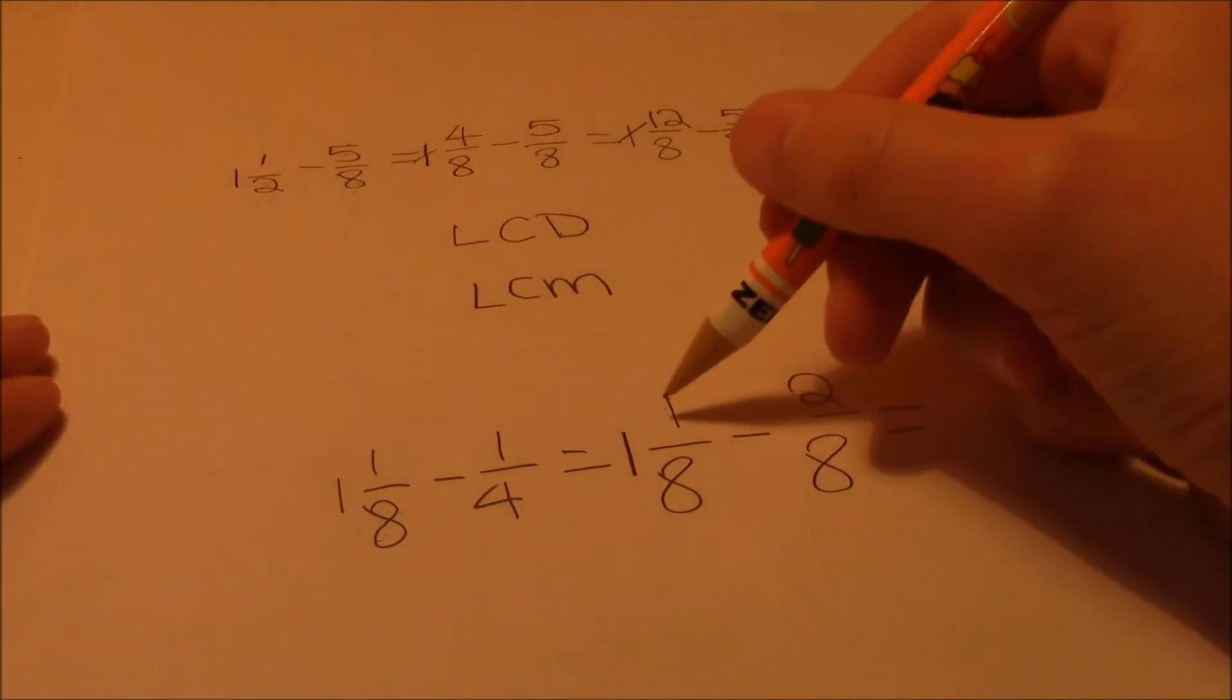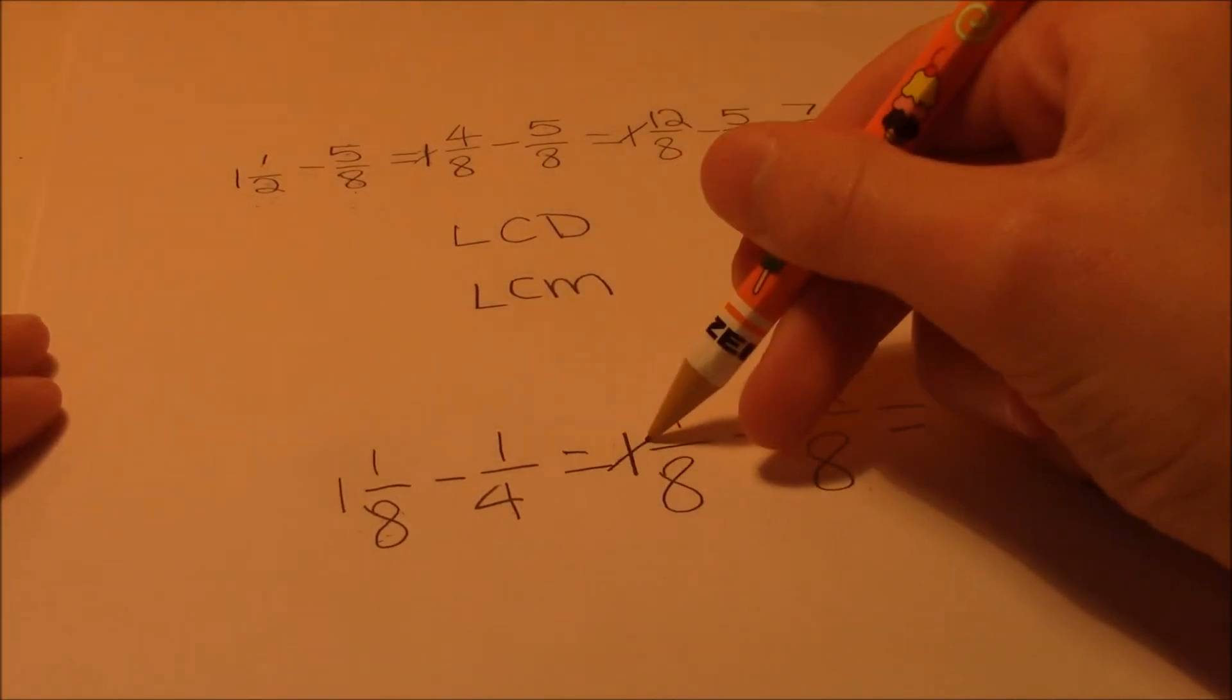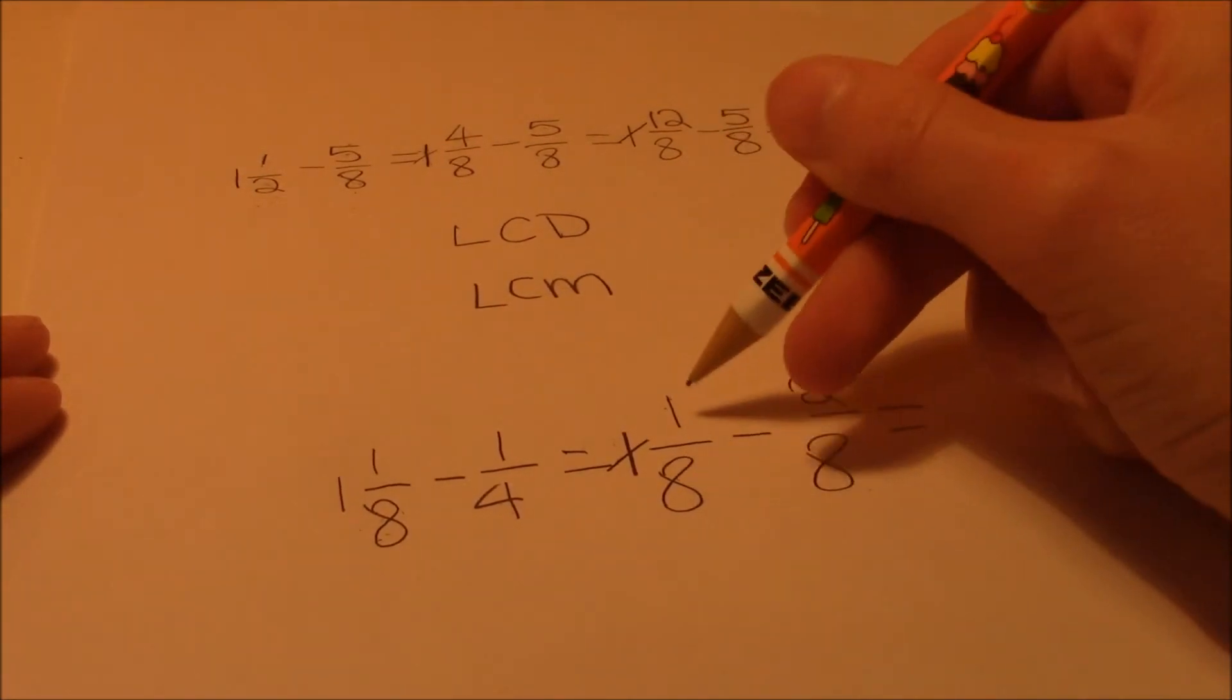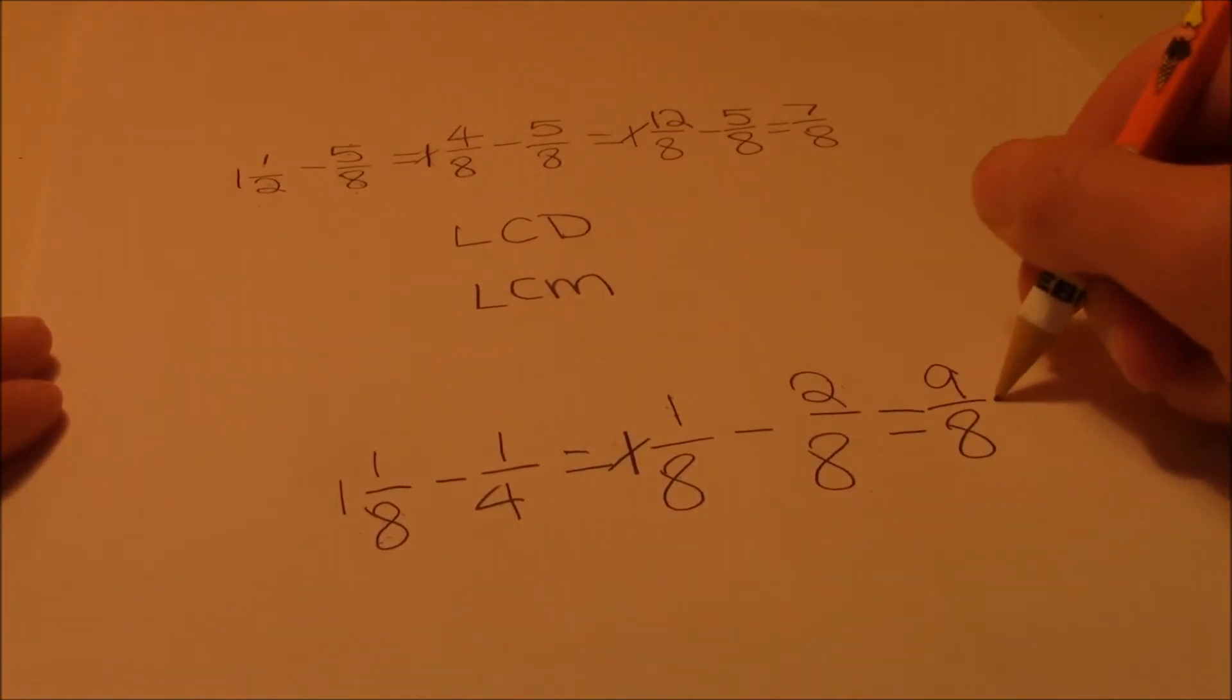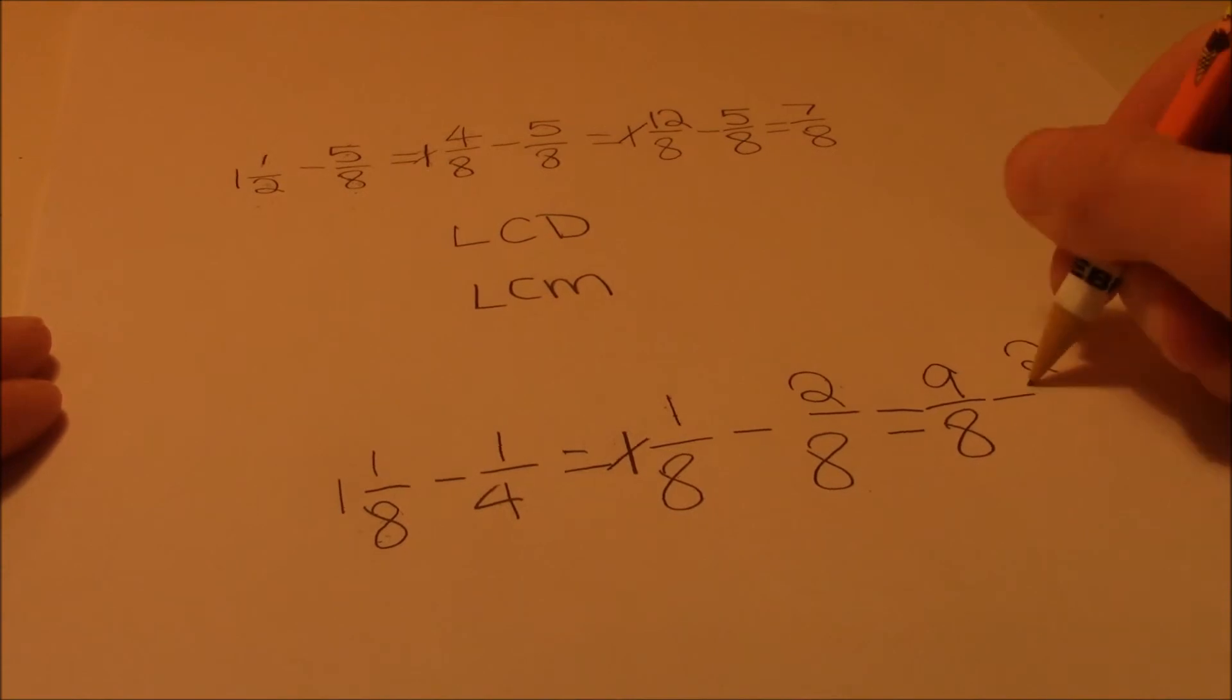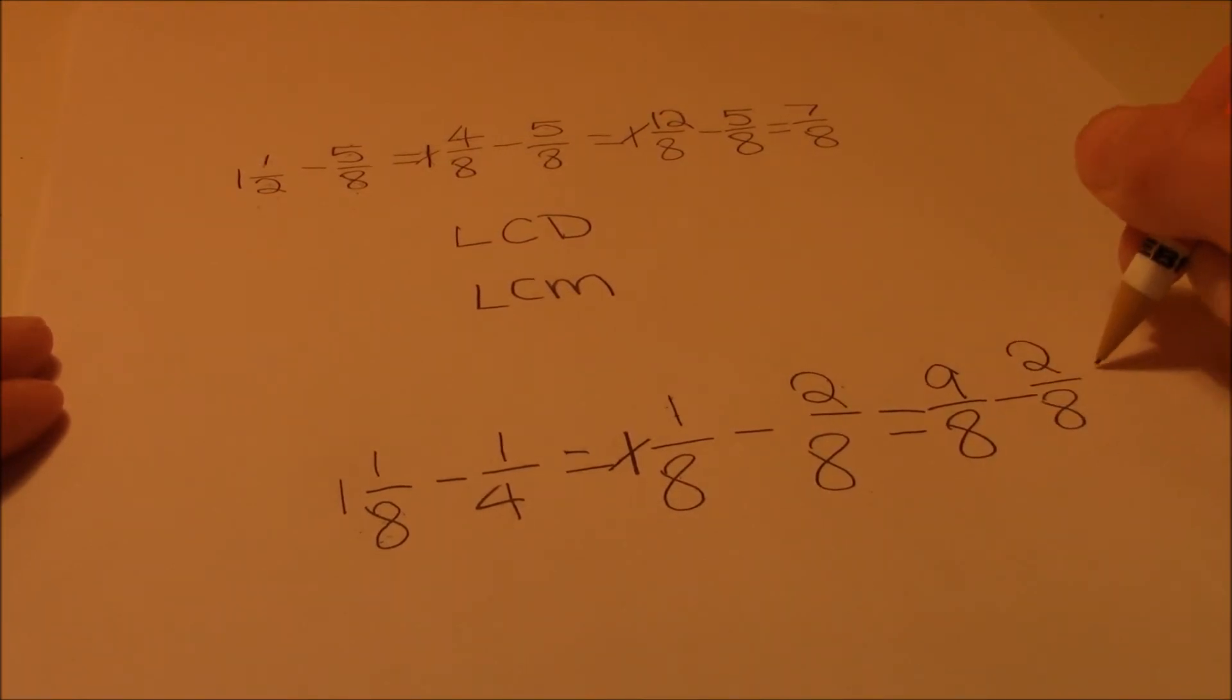So, we have to cancel this one out, and do 8 plus 1, which is 9 over 8. And then, we have minus the 2 over 8, which is 7 over 8.